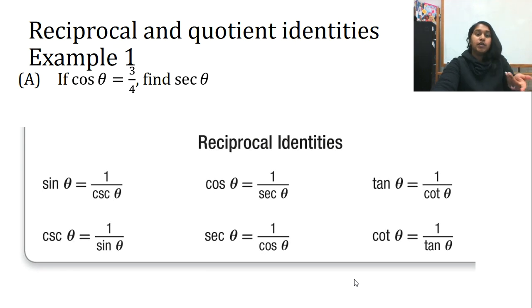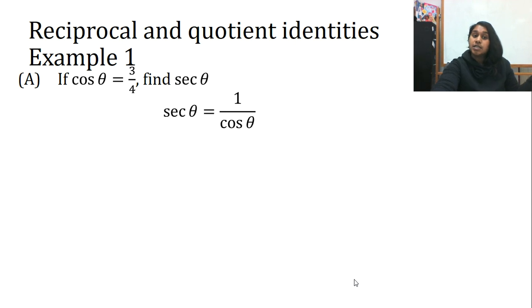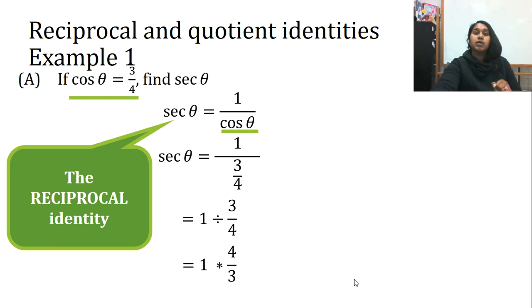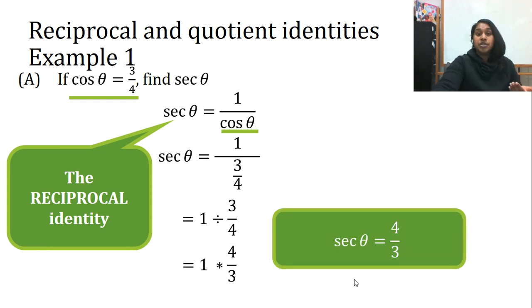So I'm just going to go ahead and look at my reciprocal identities because I know this isn't the quotient identity, and I see that secant theta is actually equal to one divided by cosine of theta. Hey, that helps us. So if I know my reciprocal identity and I know this is cosine, I can literally plug that in. Anytime you're dividing a fraction, you're actually multiplying by the reciprocal of the denominator, so it ends up becoming simply four-thirds.